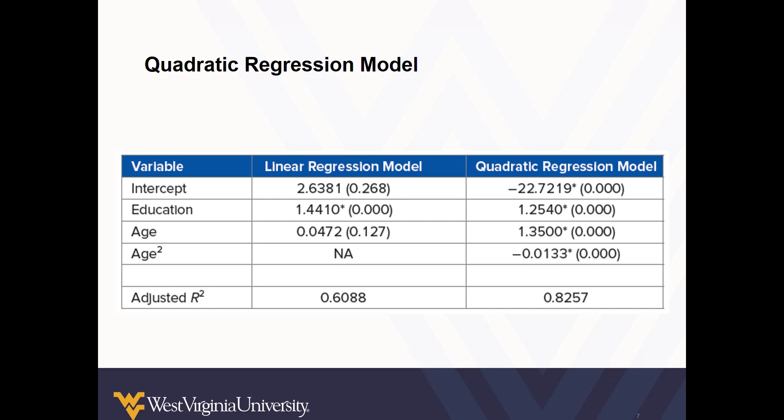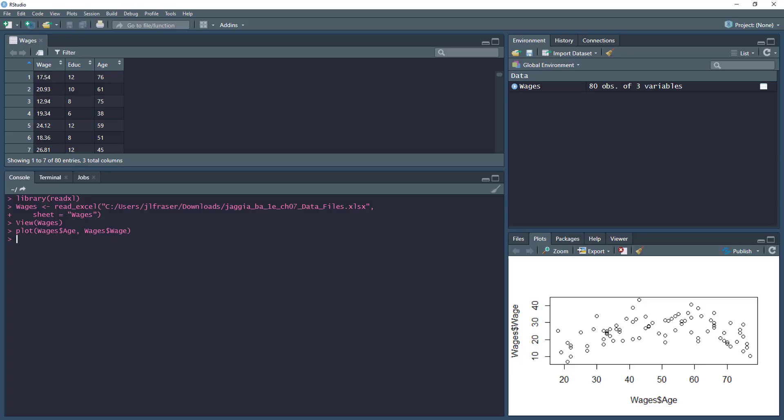First we'll try it without any transformations and then we'll raise age to the second power. So model one is going to be wage, so we're predicting wage from the wages dataset. We've created that object.